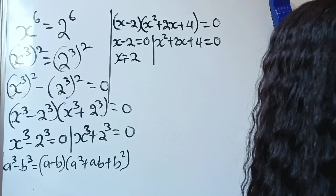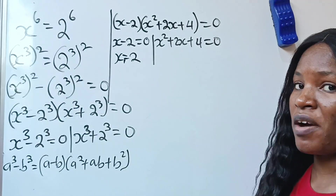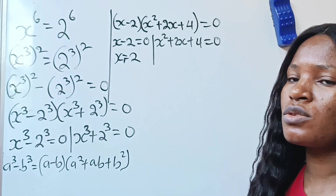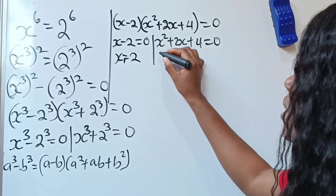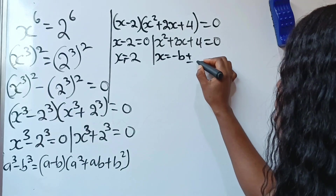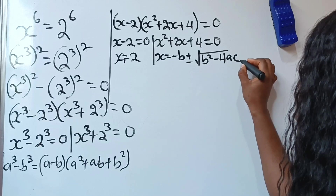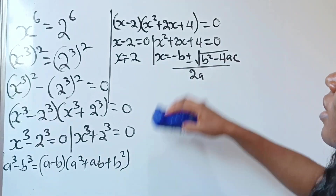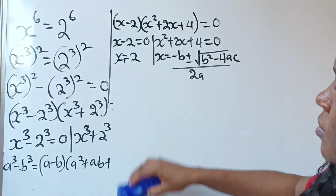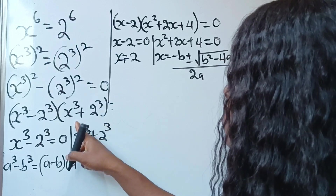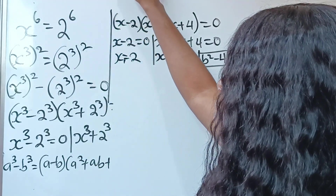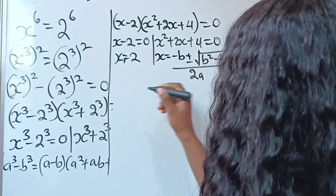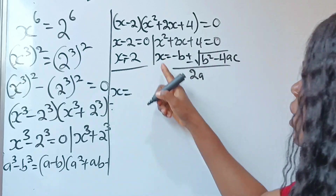For x squared plus 2x plus 4 equals 0, we cannot solve this by factorization. So we are going to use the quadratic formula: x equals minus b plus or minus the square root of b squared minus 4ac, everything divided by 2a. Note that x to the power of 3 plus 2 to the power of 3 equals 0 is still our second case — we are still on the first case.